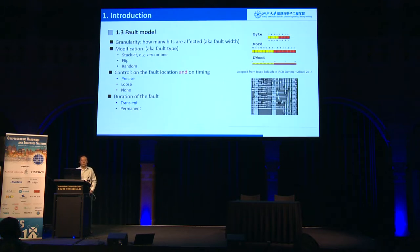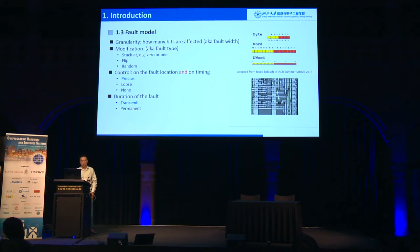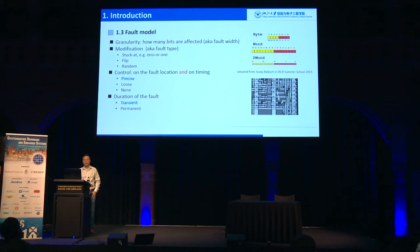When we talk about fault attacks, we need to mention the fault model. It includes fault width, fault type, fault location, and timing. Fault location means in which byte or nibble the fault is injected. Timing means in which round or in which operation the fault is injected. Those with experience in physical experiments of fault attacks know it requires very tight or precise timing control.